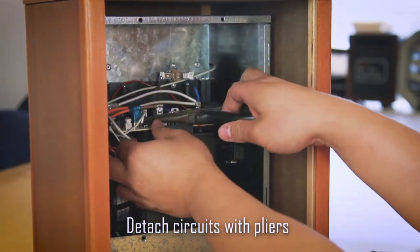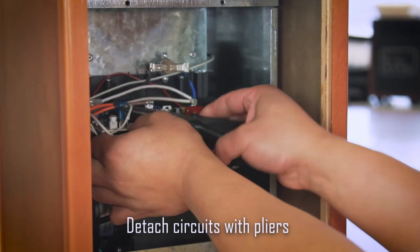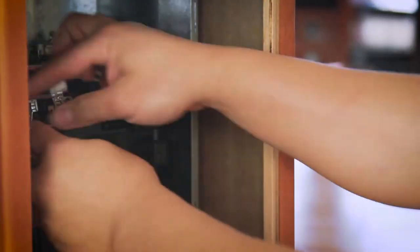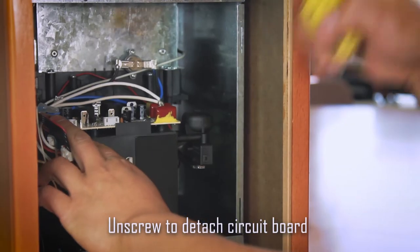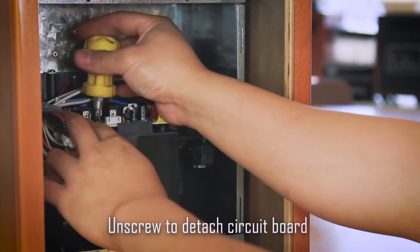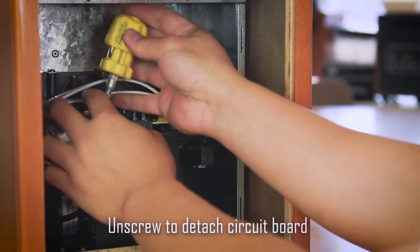Detach the circuits from the circuit board with your pliers. Then use your small screwdriver to remove the screw that attaches the circuit board to the infrared heater.